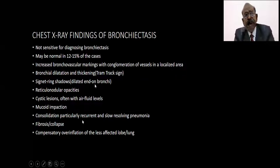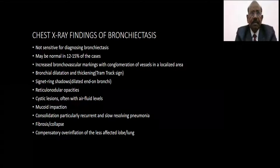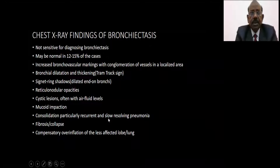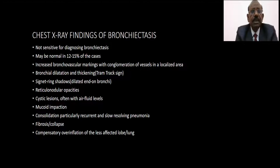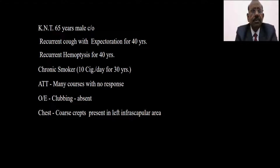Regarding consolidation, two more phenomena are associated with bronchiectasis. One is recurrent pneumonia at the same site — wherever there are bronchiectatic changes, secretions collect and infection goes there, so pneumonia may occur at the same site and it may be slow resolving. Fibrosis and collapse may happen in long-standing bronchiectasis, and if one or a whole lobe or whole lung is affected, there could be compensatory emphysema. These are the X-ray changes by which you can suspect bronchiectasis.